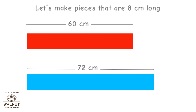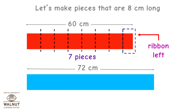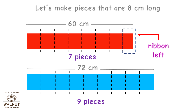Let's make pieces that are 8 cm long. If you divide 60 by 8, you will get 7 — that is 7 equal pieces. You have 4 cm of ribbon left. Now make pieces of blue ribbon: if you divide 72 by 8, you will get 9 — that is 9 equal pieces, with no ribbon left. But there is ribbon left in the red piece, so we cannot make pieces that are 8 cm long.